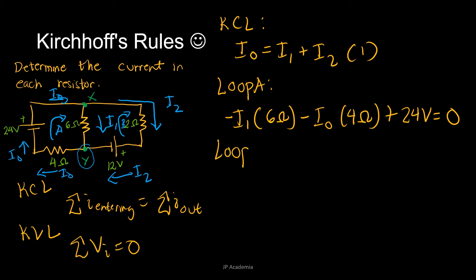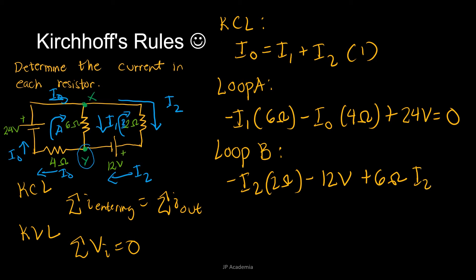For loop B, following the same sign convention and Kirchhoff's Voltage Law: first we pass through the 2-ohm resistor following current I2, so we have negative I2 times 2 ohms. Then we pass through the 12-volt battery from positive to negative terminal, so that's negative 12 volts. Then we pass through the 6-ohm resistor against the current I1, so that's positive 6 ohms times I1. This equals 0 — this is equation 3.